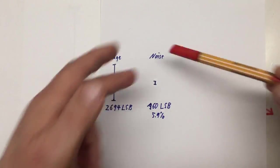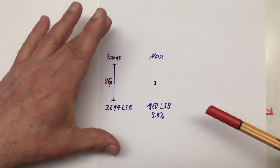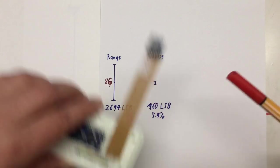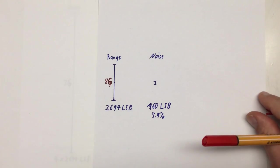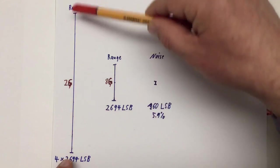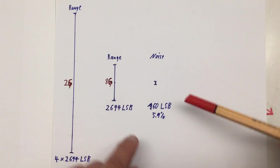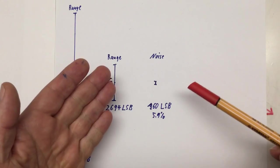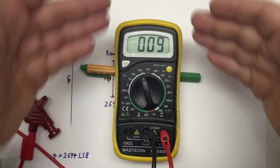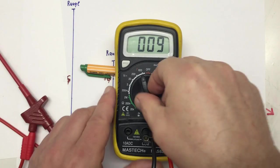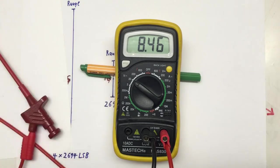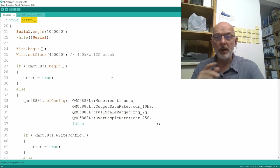Obviously we cannot do anything about the noise itself, but maybe we can do something about our signal range. We're currently operating at 8 gauss full scale, but we have the option to operate at 2 gauss full scale — basically quadrupling our signal range and in relation quartering our effective noise level. That assumes the noise stays the same when we turn down the full scale, similar to turning down the range on a multimeter to get more digits.